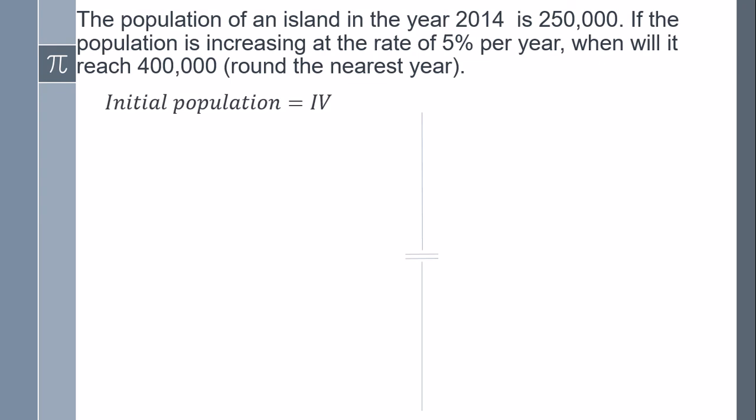I am going to label my variables, so the initial population I am going to label IV, the second is going to be the final population which is going to be FV, and the rate is going to be R, so it is going to be 5% or in decimals it is going to be 0.05.